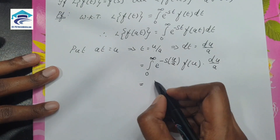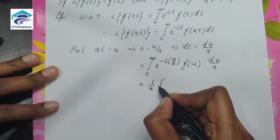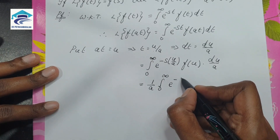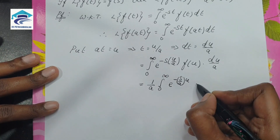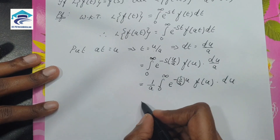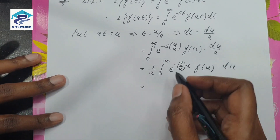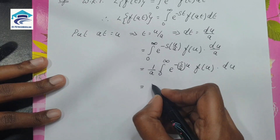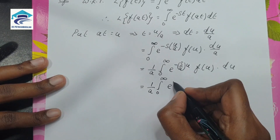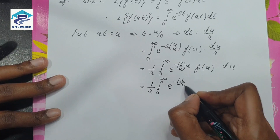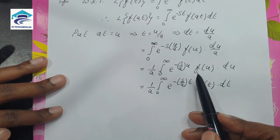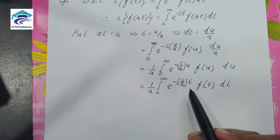Rearranging, we can take the constant outside. So this becomes (1/a) times the integral from 0 to infinity of e to the power minus (s/a) times u, times f(u) du. For convenience, let us write this in terms of t by changing u to t, giving the integral from 0 to infinity of e to the power minus (s/a) times t, times f(t) dt.